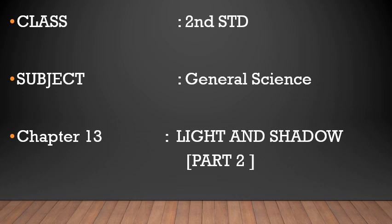The man-made forms of light — sources of light — are fire, candle, lantern, tube light, and bulb. So this is what we learnt in our previous class.